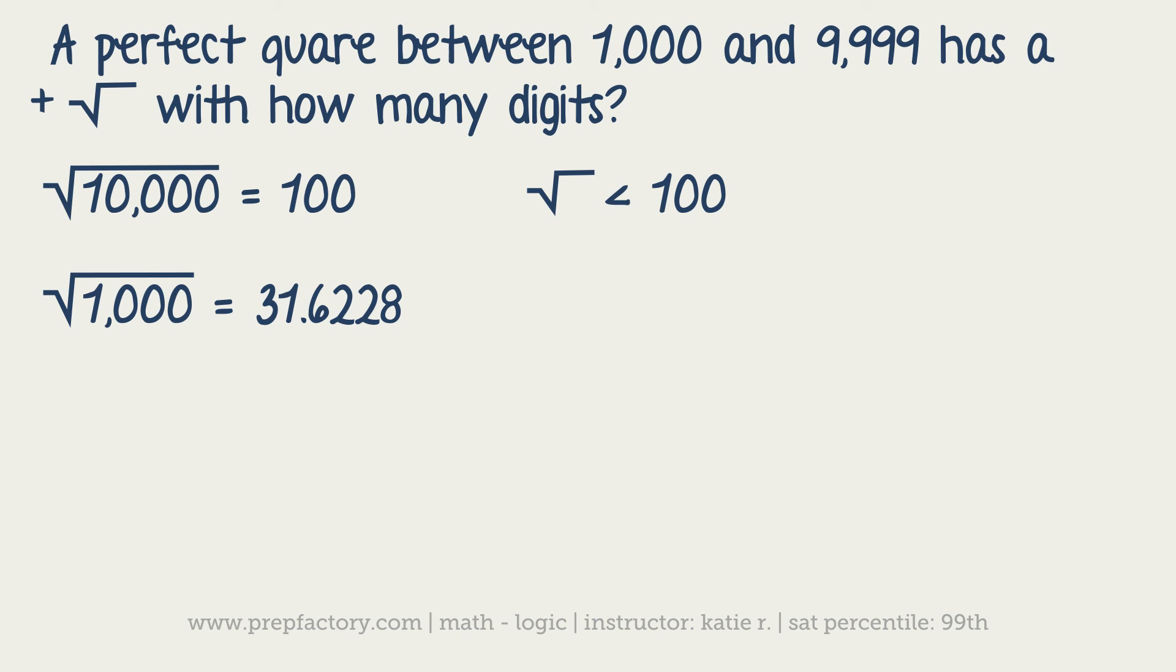So you now know that your square root of whatever X is has to be less than 100 and also has to be greater than 31.6. So you know that your number is between, let's say, 32 and 99. You know that your number has to have two digits because you know it's less than 100 and it's more than 32, which is a two-digit number.